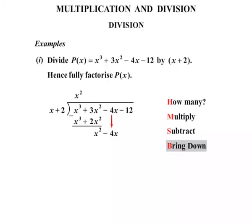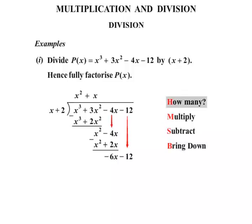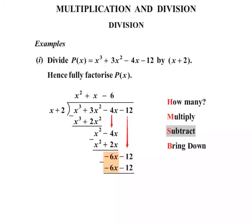Now it's just a matter of repeating those steps. How many times does x go into x squared? That goes x times, so we write plus x. Then multiply: plus x times x plus 2 gives x squared plus 2x. Subtract: x squared minus x squared is gone. Minus 4x minus 2x is minus 6x. The next stage is to bring down minus 12. The loop starts again. How many times does x go into minus 6x? x times minus 6 gives minus 6x, so we write minus 6. Multiply: minus 6 times x plus 2 gives minus 6x minus 12.